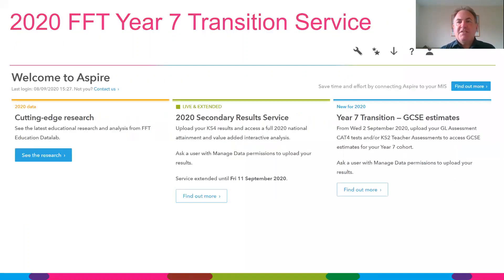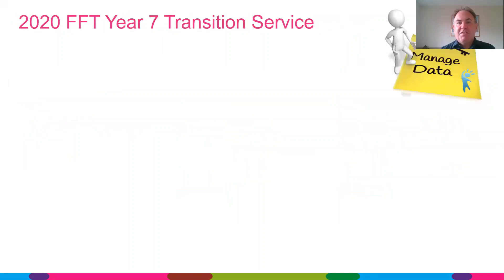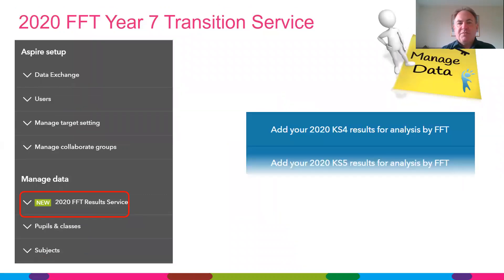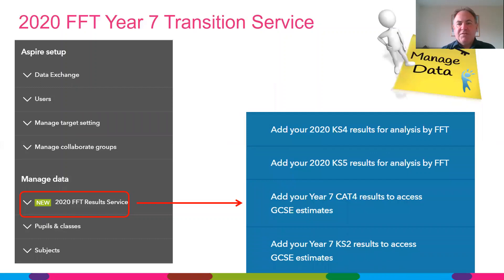To submit the data to FFT you need to log into Aspire and go to the spanner icon — you do need to be a managed data user. That will then give you the options under the Manage Data menu. Under the 2020 FFT Results Service, you need to select the Year 7 Cat 4 option.